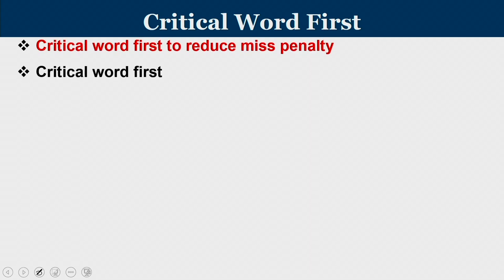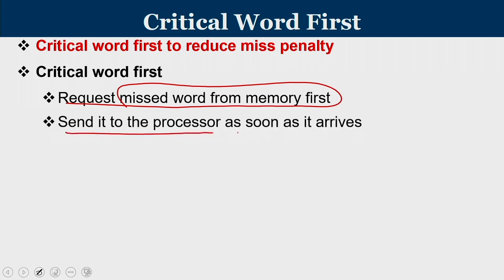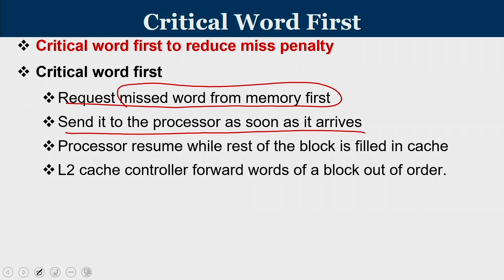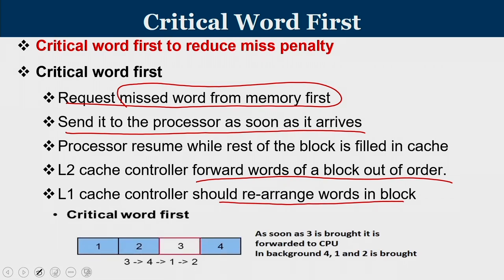Yet another optimization is critical word first, which is an extension of early restart and also reduces miss penalty. In critical word first, the missed word is requested from memory first — that is very important. In early restart the L2 cache controller still supplies data in order, but in critical word first, whichever is the requested word is delivered first. It is sent to the processor as soon as it arrives; the processor resumes while the rest of the block is filled in the cache. The L2 cache controller forwards words of a block out of order, and the L1 cache controller rearranges these words in the corresponding block.